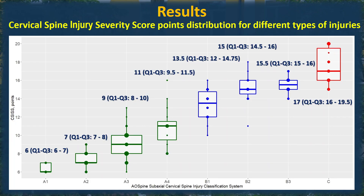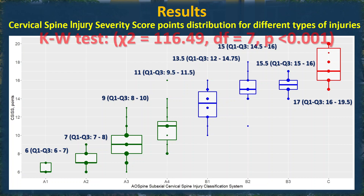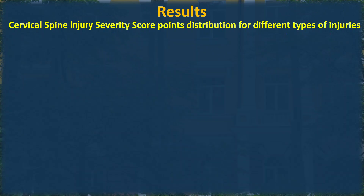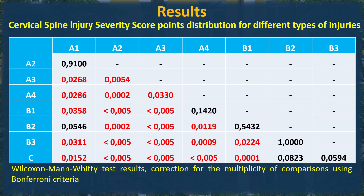The same calculations for level of instability: the Kruskal-Wallis test shows significance of difference, and the Cervical Spine Injury Severity Score points change incrementally from A1 to type C. However, post-hoc analysis shows a completely different picture — only types B and C do not statistically differ from each other.